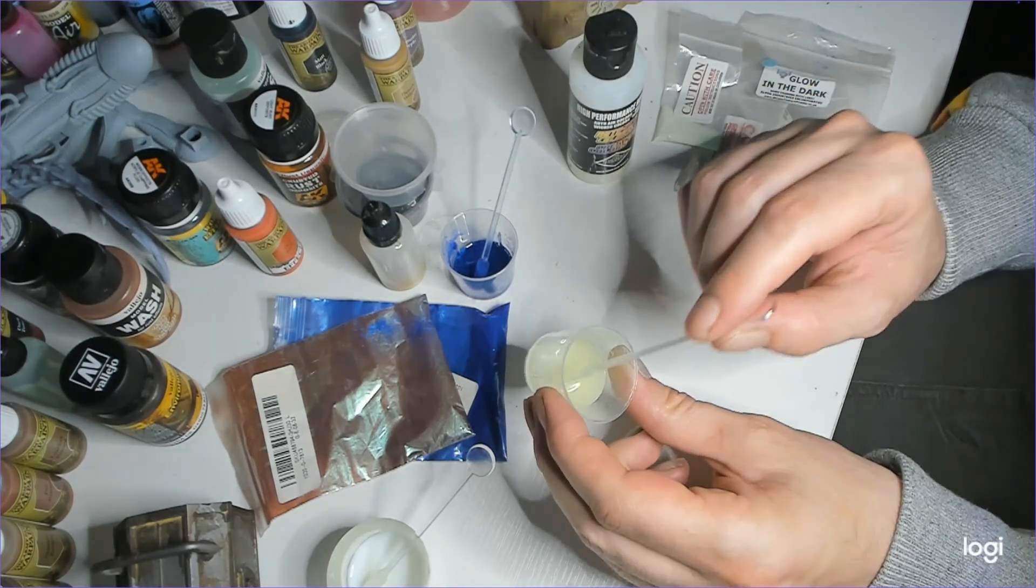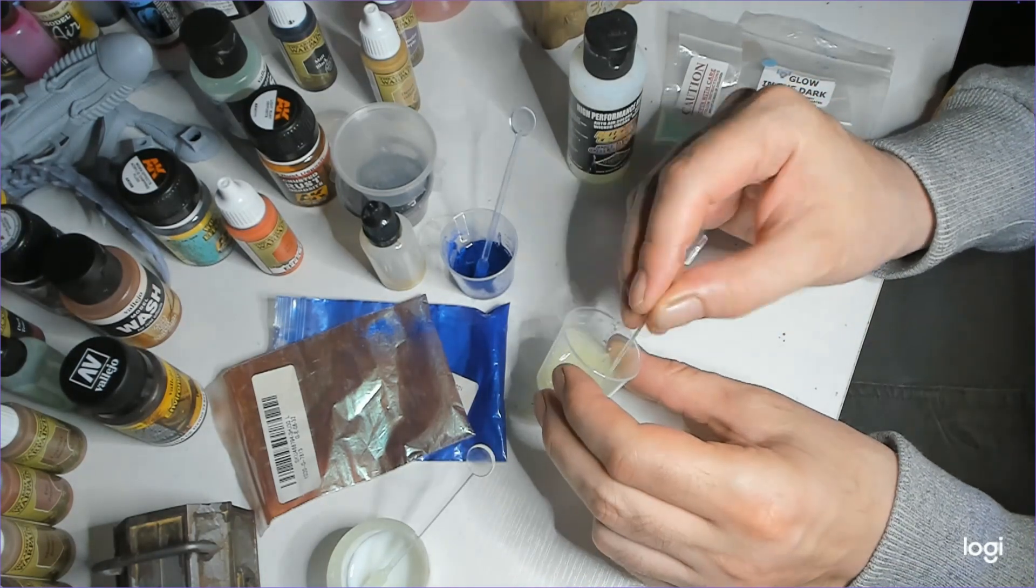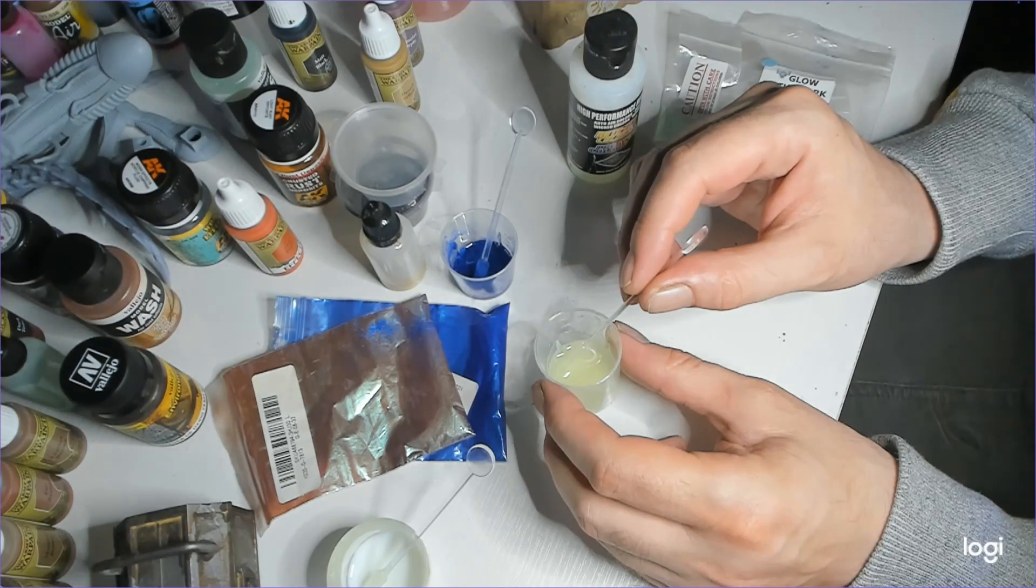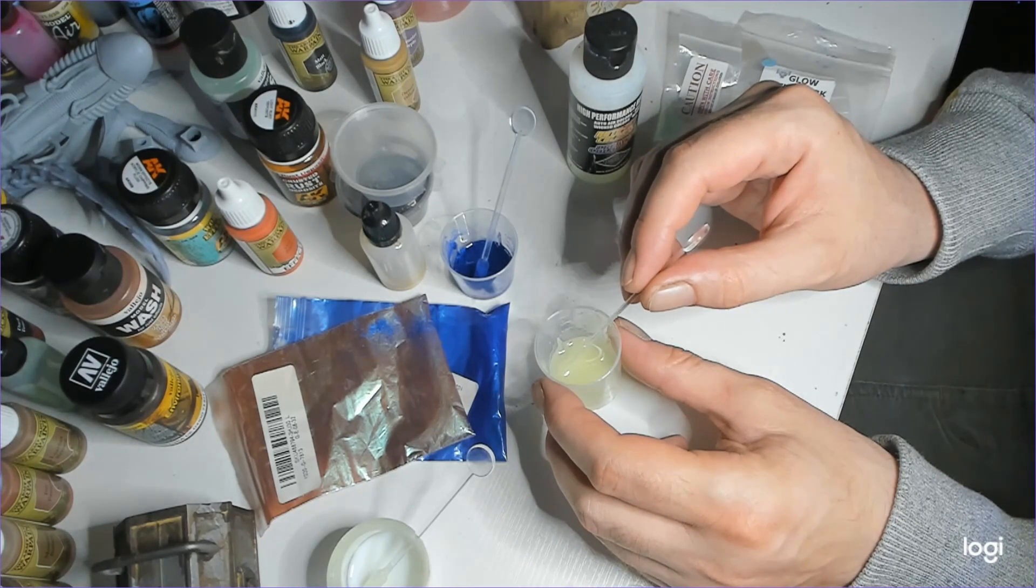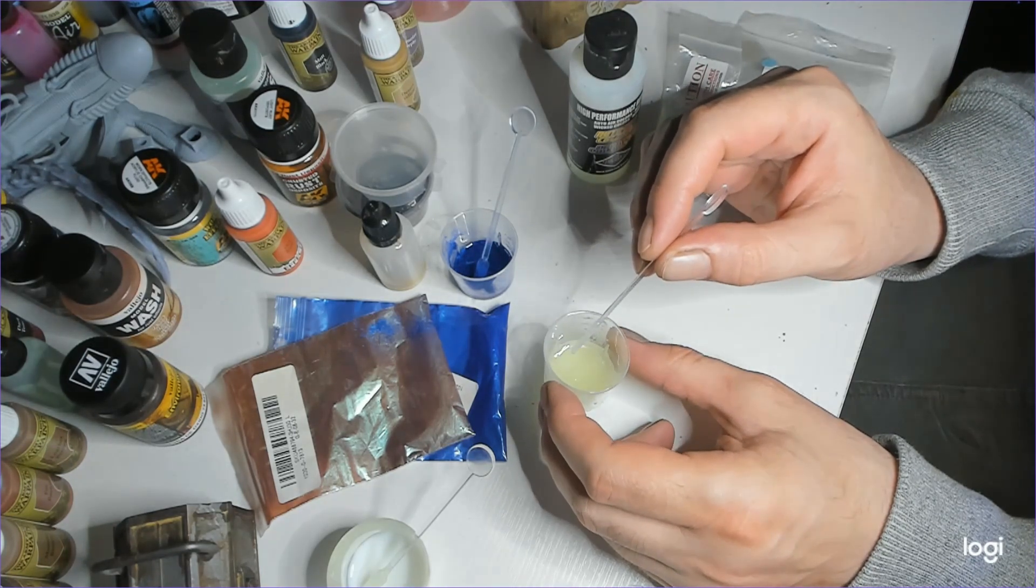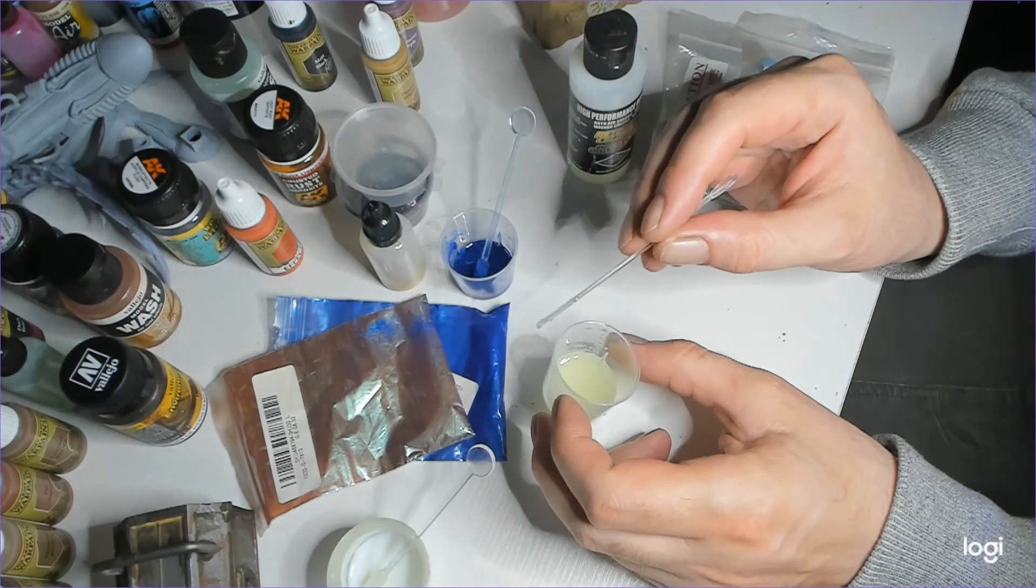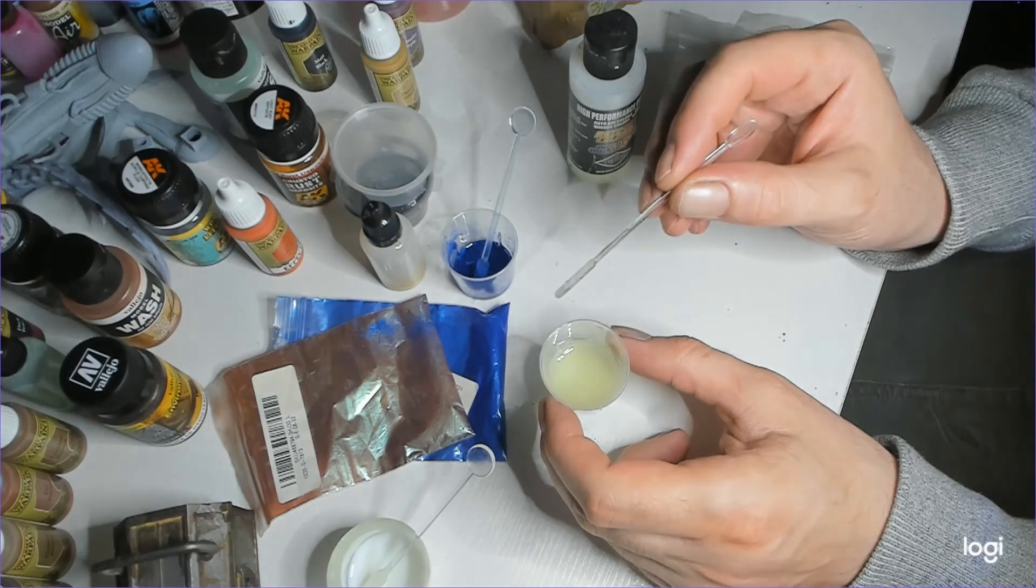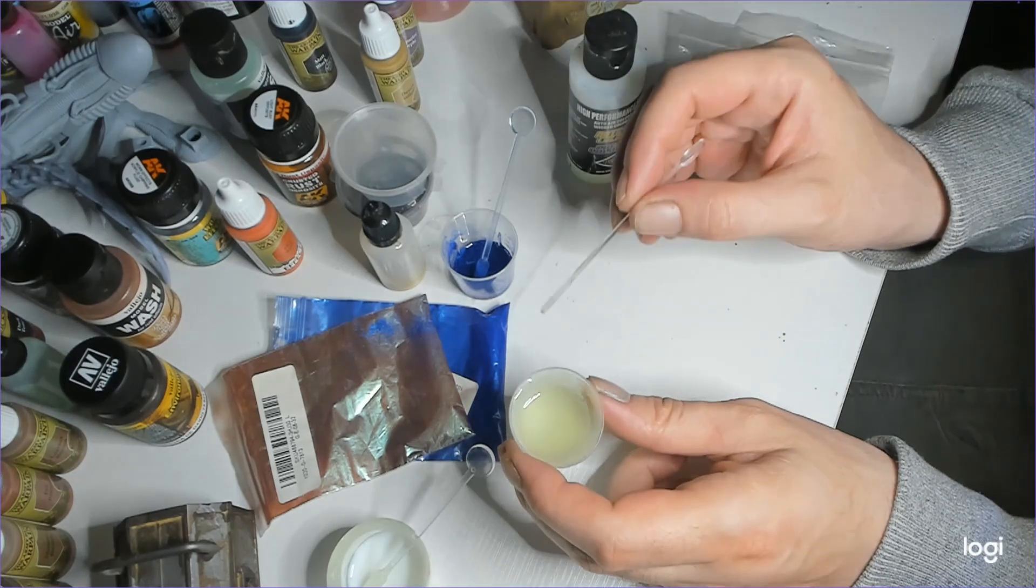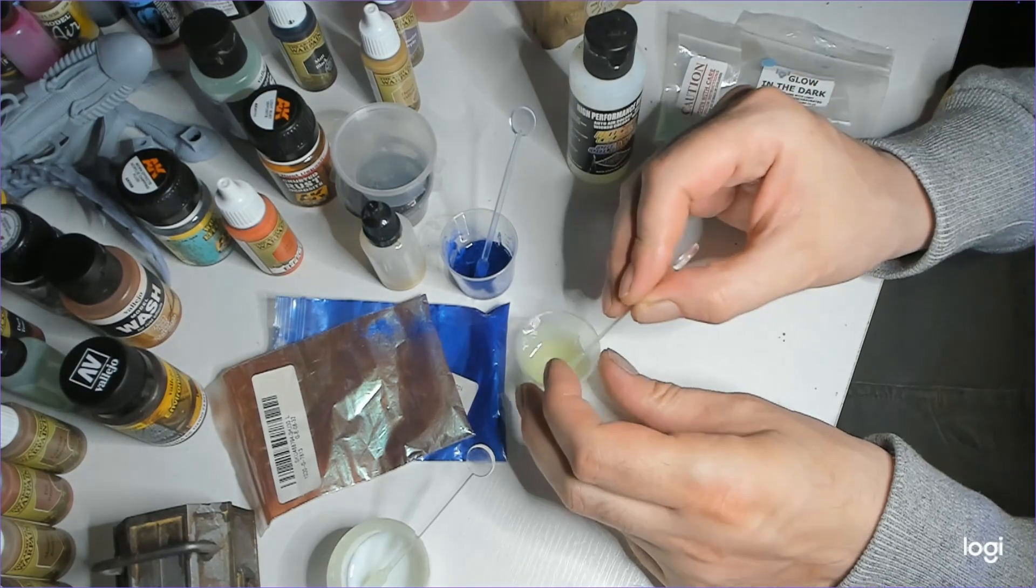This is just normal AnyQubic translucent resin. Personally, I think it would be better to try this with the ABS-like resin. Because, from my experience, the Elegoo ABS-like resin is much more, I don't know, it's got higher viscosity. It's thicker, slightly thicker. I'm not sure how often you guys print or if you use the ABS-like stuff, but it tends to be thicker stuff.